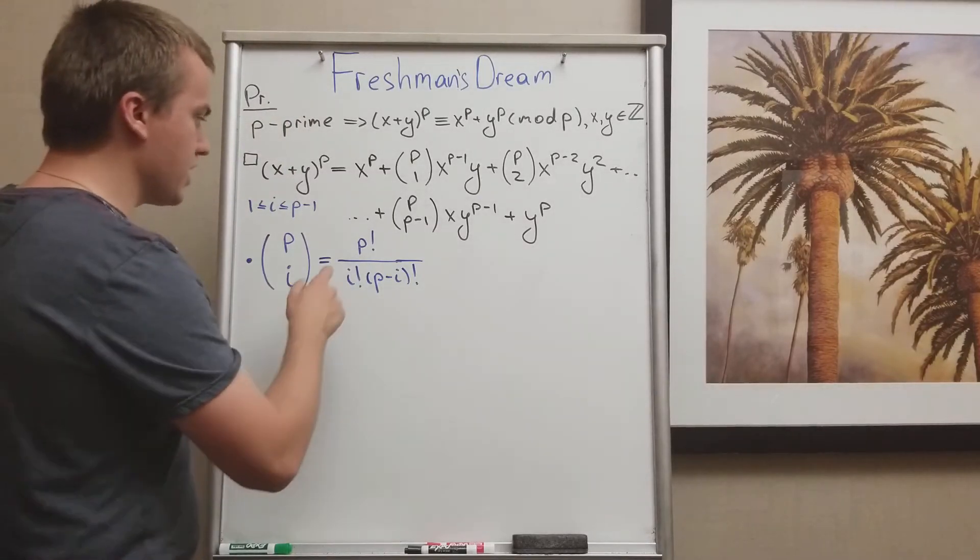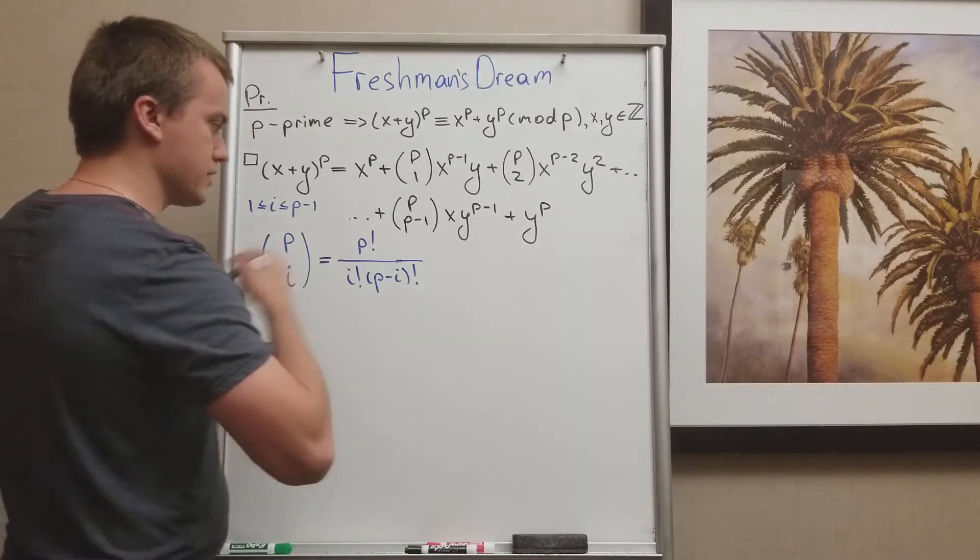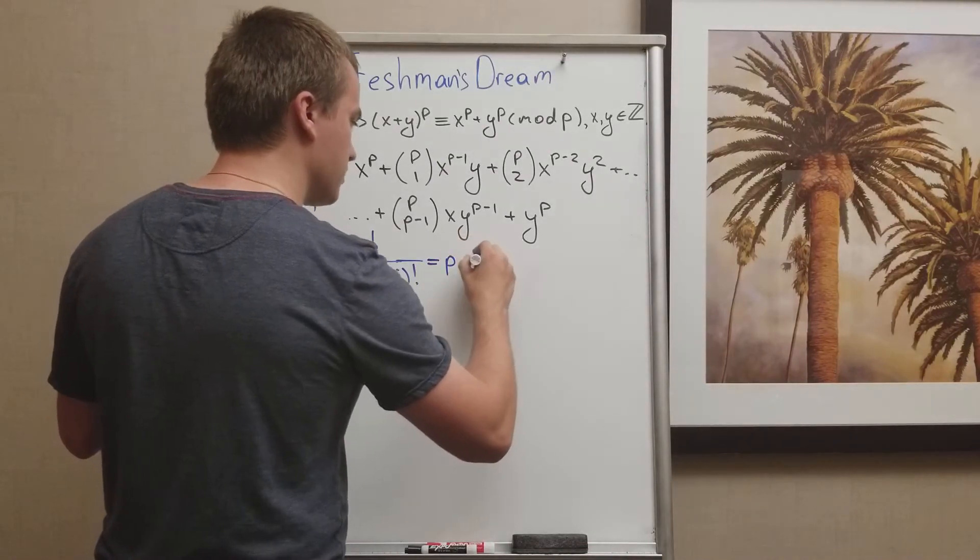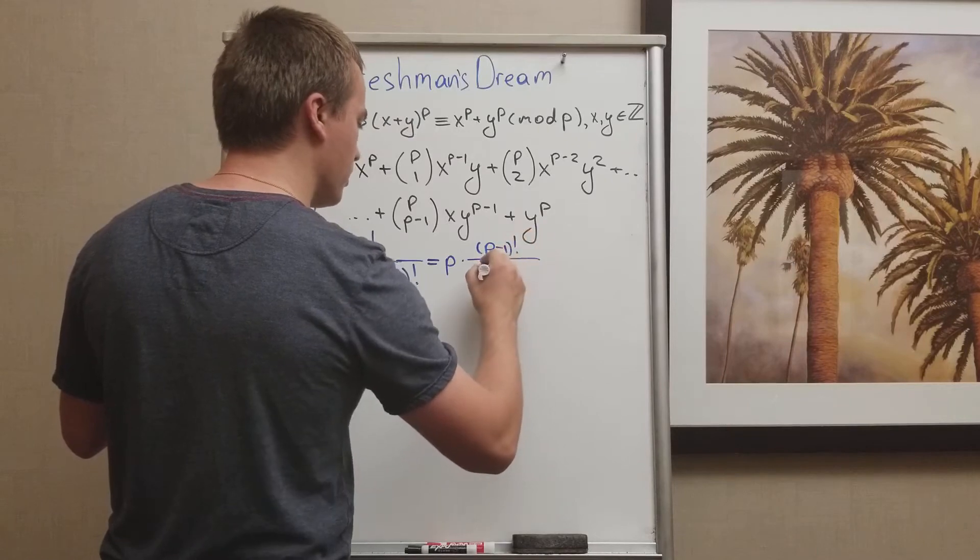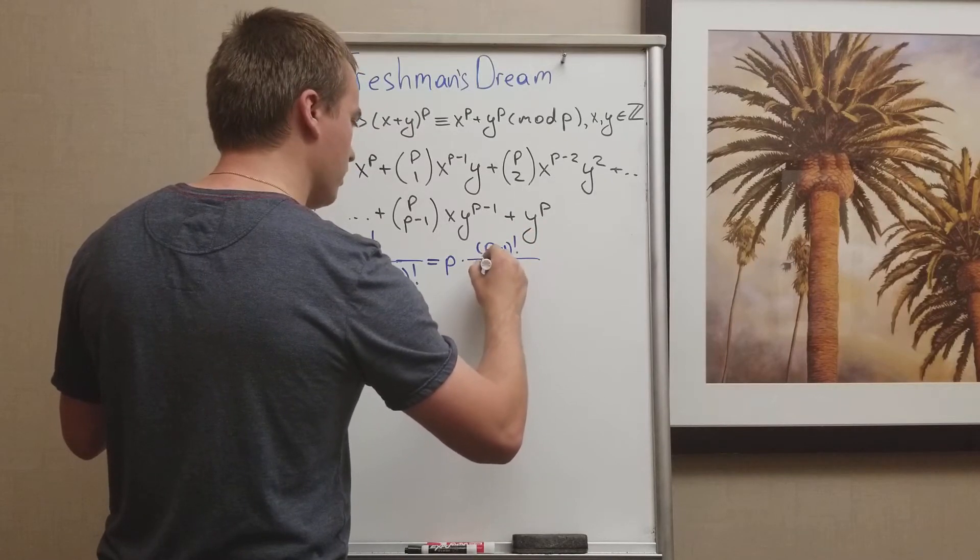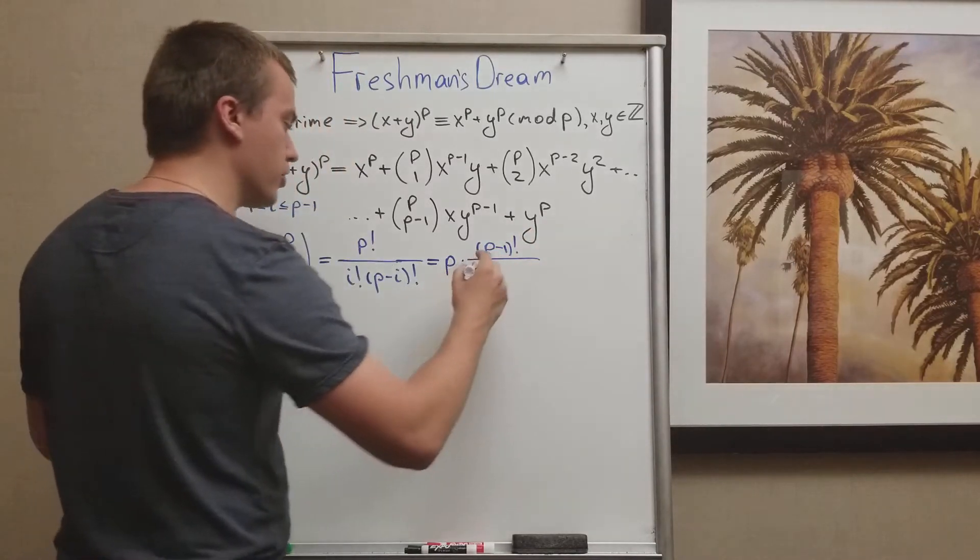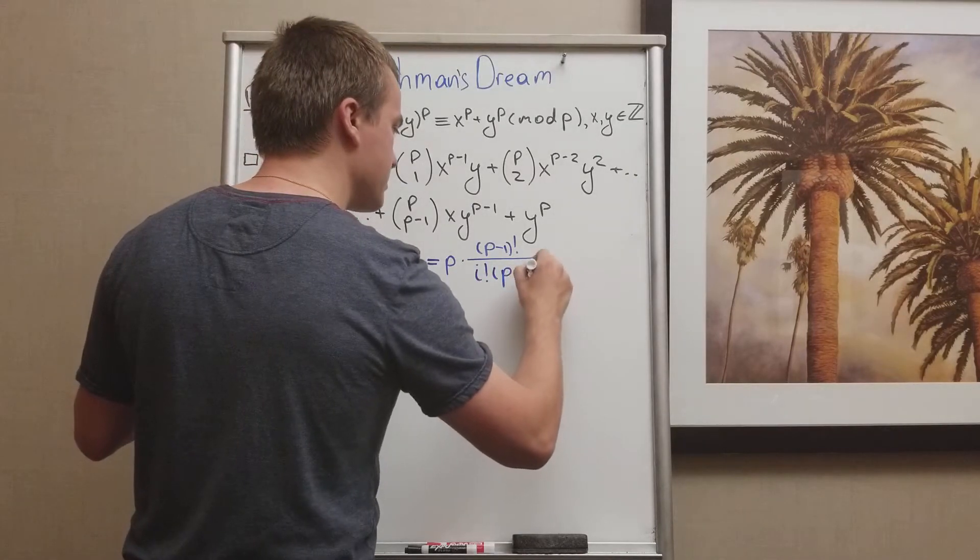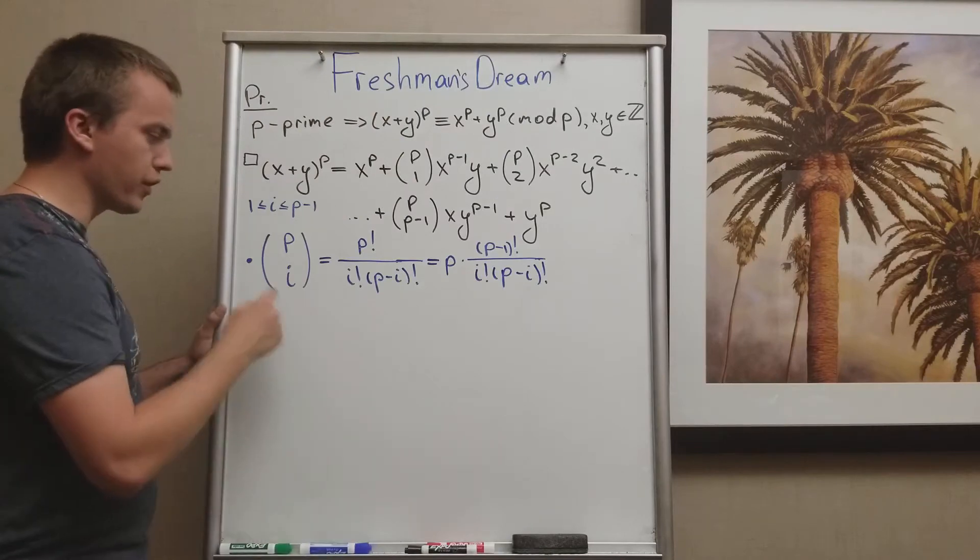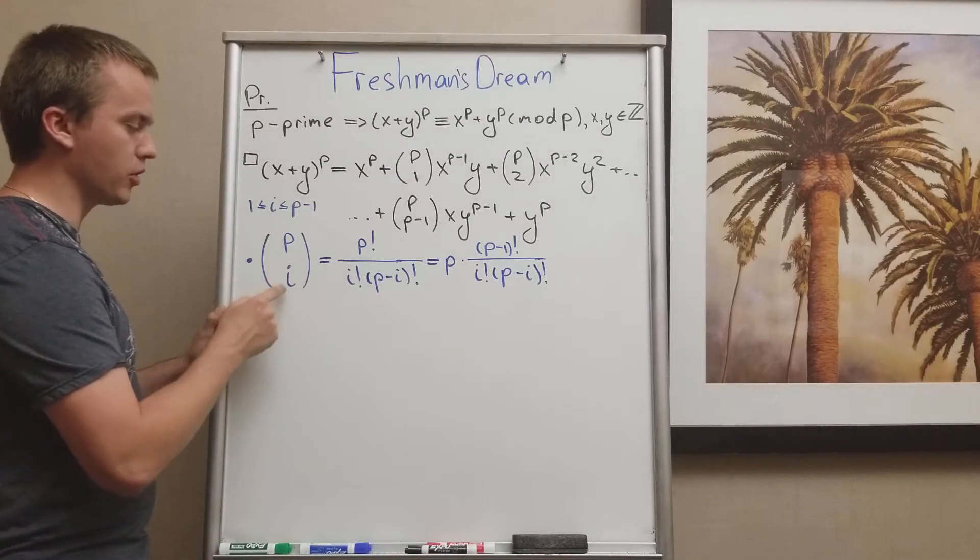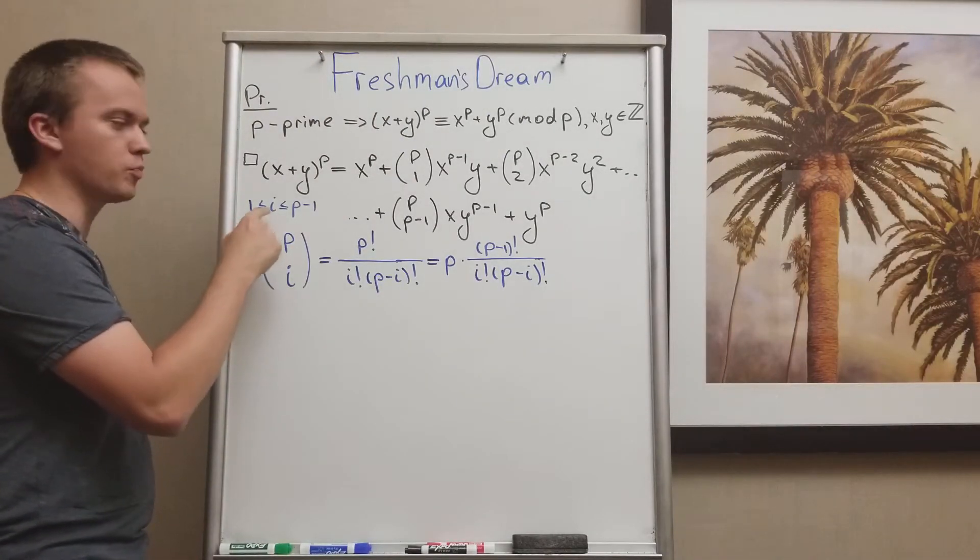And what I have, let's just write this down as equal p times, on the top we'll have p minus 1 factorial over i factorial times p minus i factorial. And this is a binomial coefficient. And this will be a binomial coefficient when i changes from 1 to p minus 1.